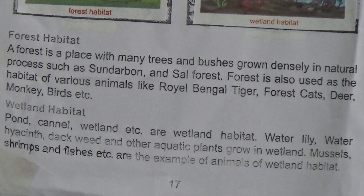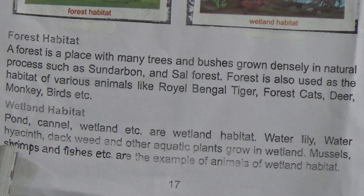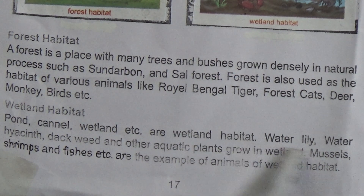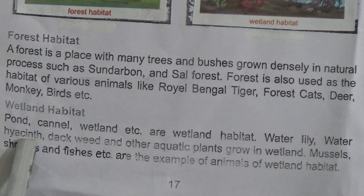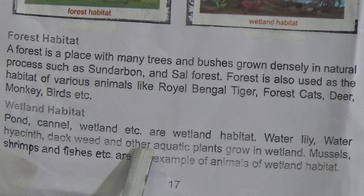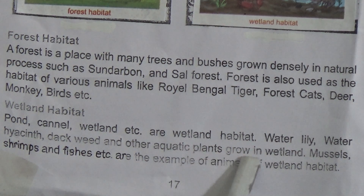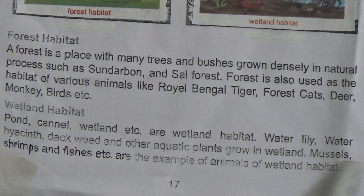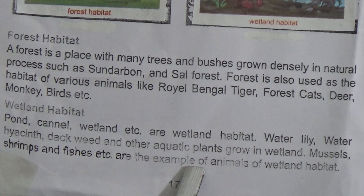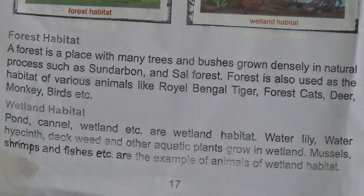Now wetland habitat: ponds, cattle wetlands, and similar areas are wetland habitats. Water lily, water hyacinth, duck weed, and other aquatic plants grow in wetland habitats. Ducks and herons are examples of animals found in wetland habitats.